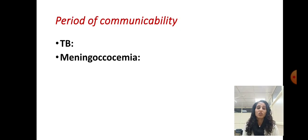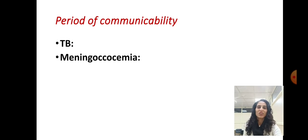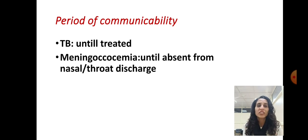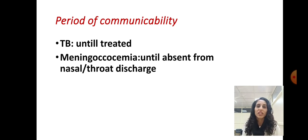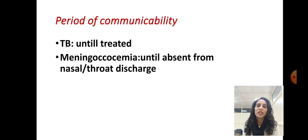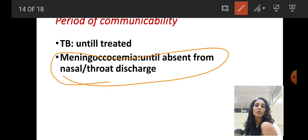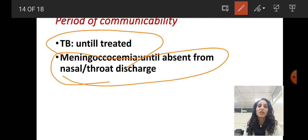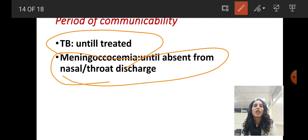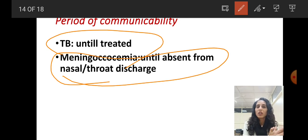Now let's cover TB and meningococcemia. For TB, the period of communicability lasts until the patient is treated — until they have completed their DOTS regimen and a doctor confirms TB has been cleared from the body. For meningococcemia, the period of communicability lasts until the organism is absent from the nasal or throat discharge. Both diseases are grouped together because their periods of communicability follow a similar principle: transmission continues until the disease is resolved.